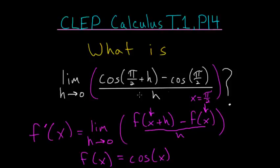So in other words, we need to evaluate the derivative of this function here, the cosine of x, at pi over 2.